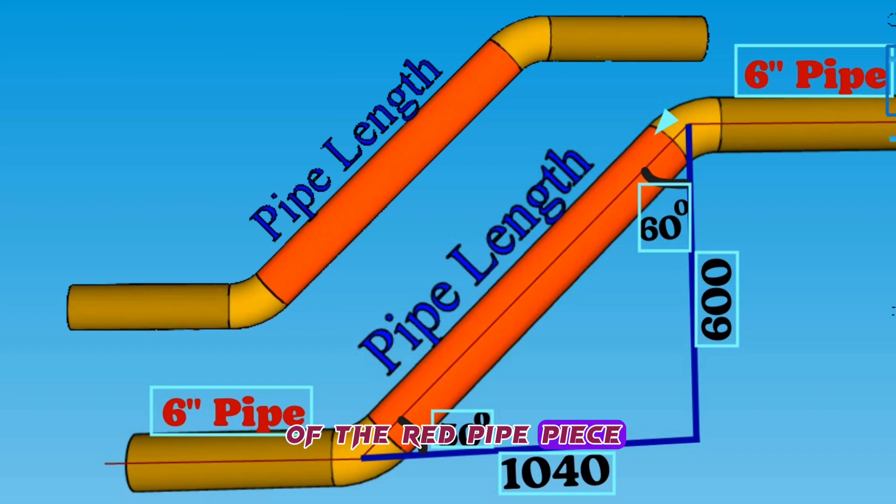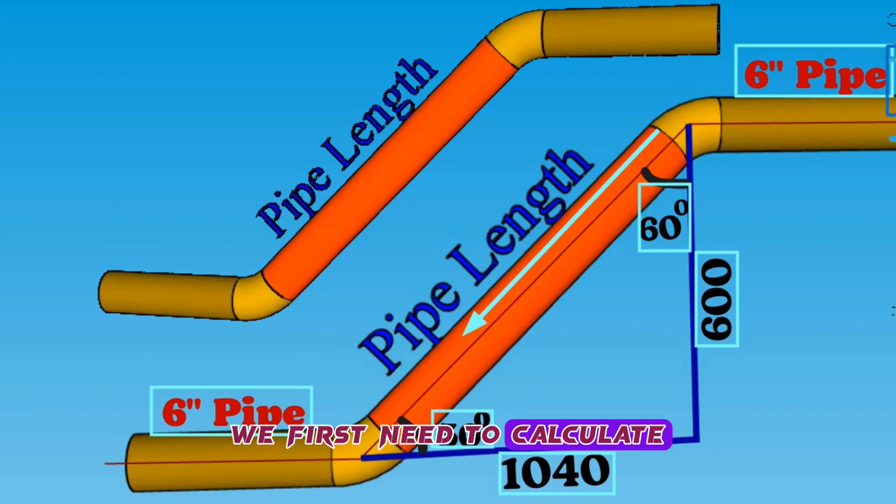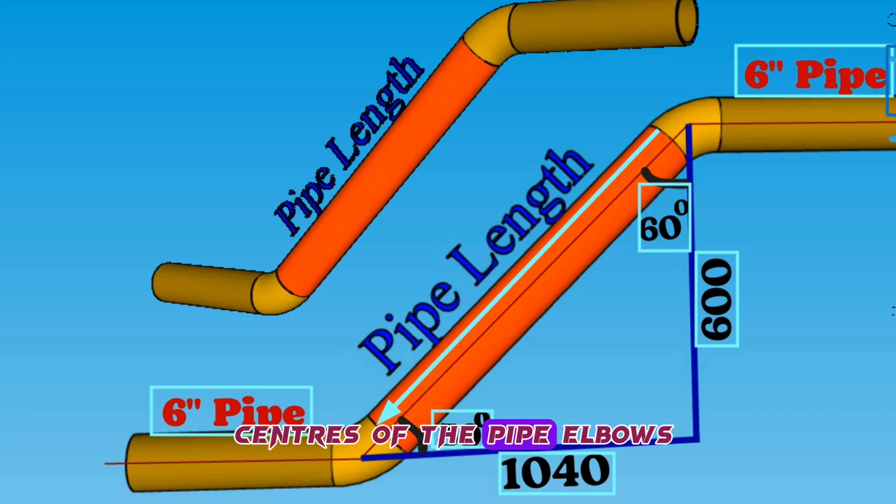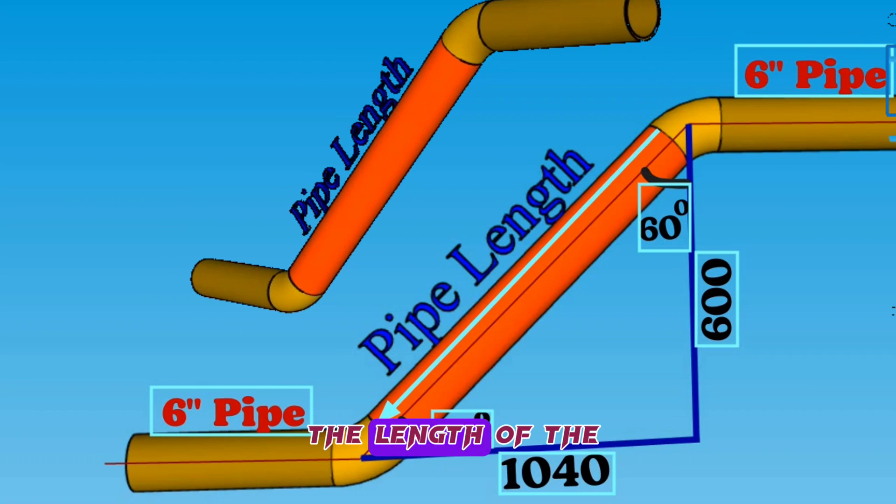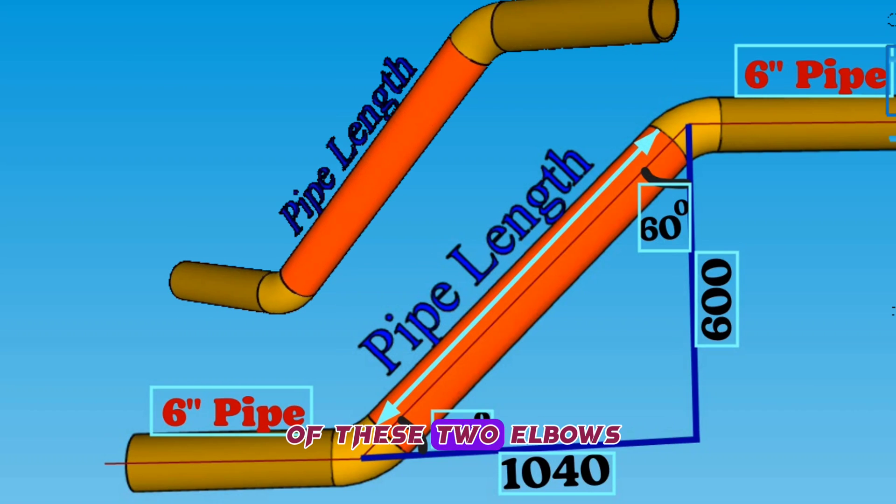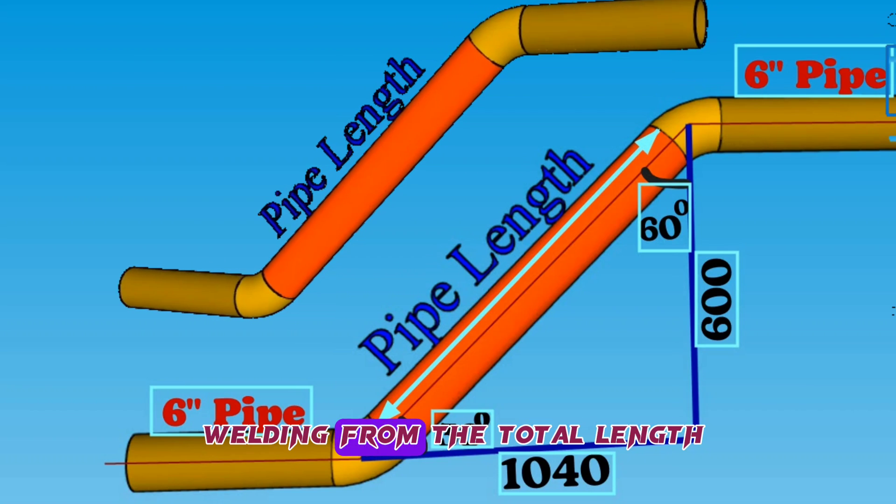To find the length of the red pipe piece, we first need to calculate the distance between the centers of the pipe elbows. Then we can find the length of the red color pipe by subtracting the lengths of these two elbows and two gaps for welding from the total length.